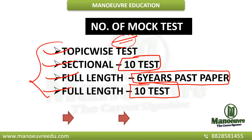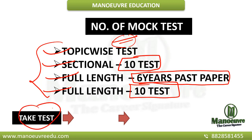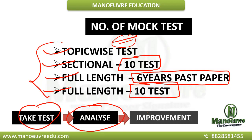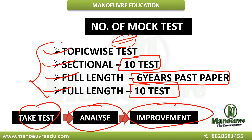To get good marks in the mock test, you have to work on 3 parameters. First, you have to take the mock test. Second, once you are done with the mock test, go for the analysis. And third, once you are done with the analysis, whatever mistakes you made in the test, you have to work on the improvement part. These are the three steps you have to follow for all the tests.